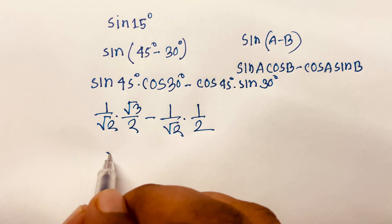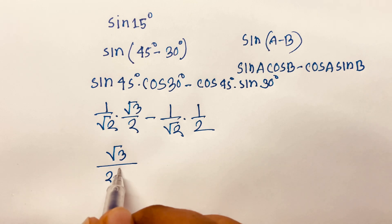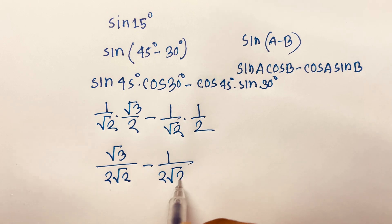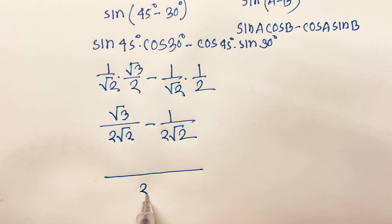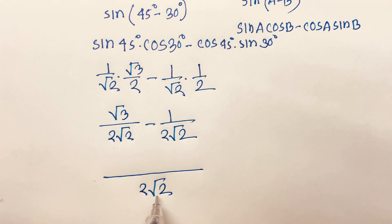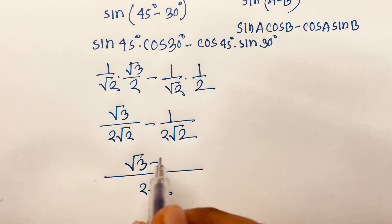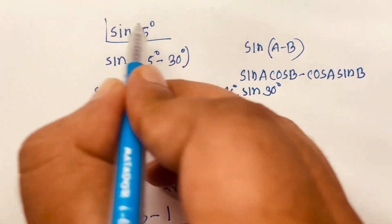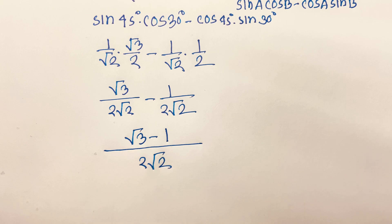This gives square root 3 over 2 square root 2 minus 1 over 2 square root 2. The common denominator is 2 square root 2, so we get square root 3 minus 1 over 2 square root 2. Therefore, sin 15 degrees equals square root 3 minus 1 over 2 square root 2.